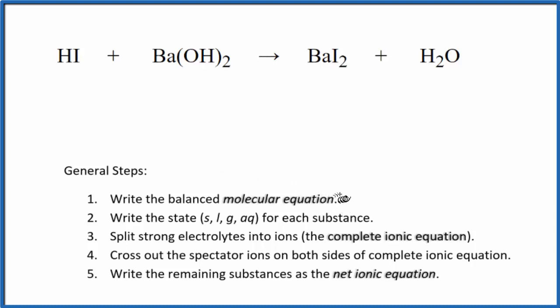First thing we need to do for net ionic equations, balance the molecular equation. You can see I have two iodines here and one here. So I'm going to put a two in front of the HI. Now it looks like I have, if I put a two here, I'll have two oxygens on this side, two on this side, four hydrogens, and then two times two, four. This is a balanced molecular equation.